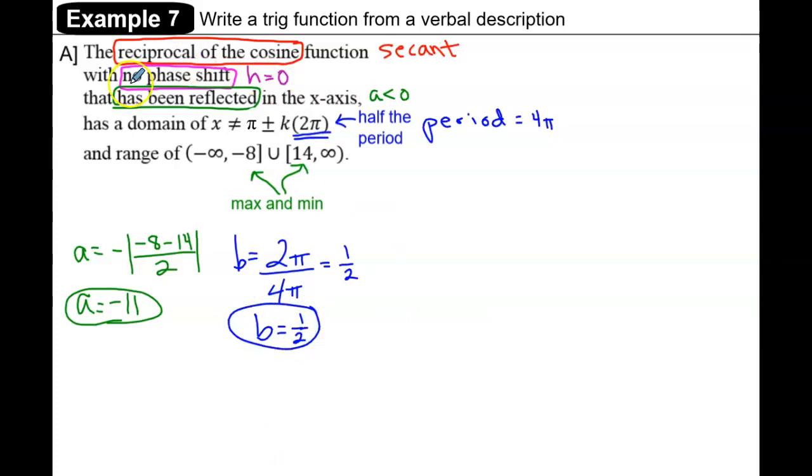We already saw that with no phase shift, h = 0. The last thing we need to find is the vertical displacement k, which is based on the max and min.